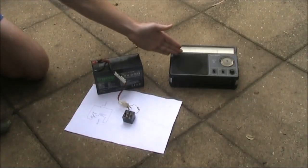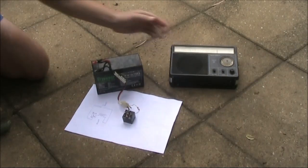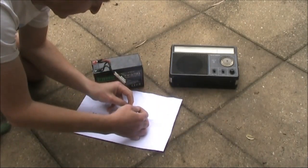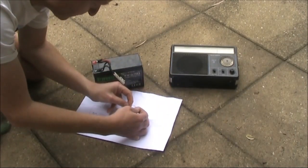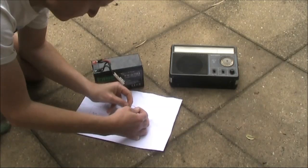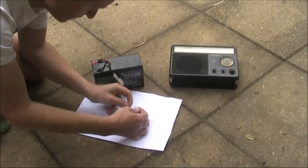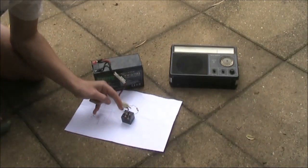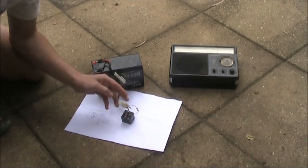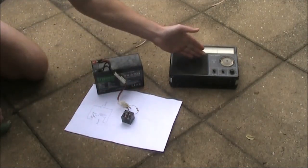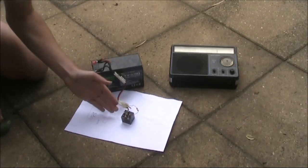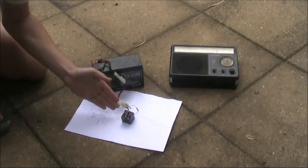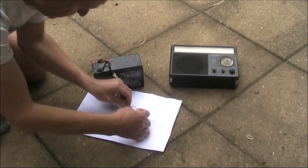Right next to the relay I've got this AM radio. I've got the volume turned up, it's in between stations, and we'll just apply power and see what happens. The arcing on the relay contacts is creating RF which is picked up on this radio. What we have made is a crude spark transmitter just like used in the early days of radio.